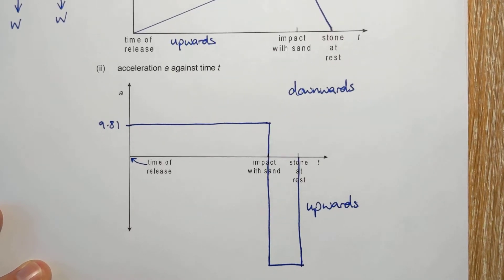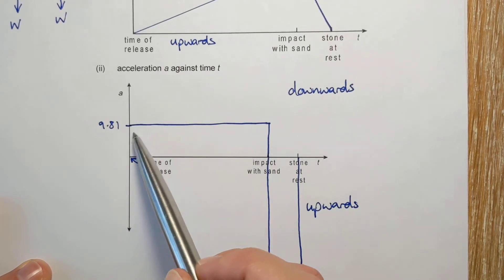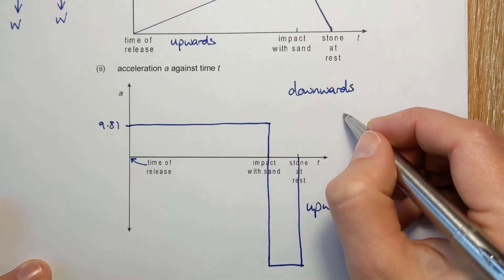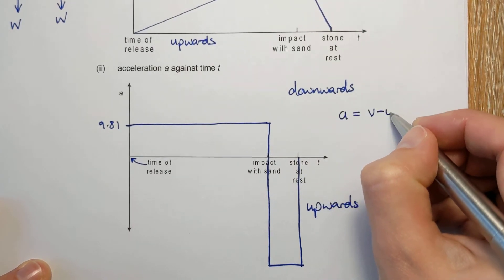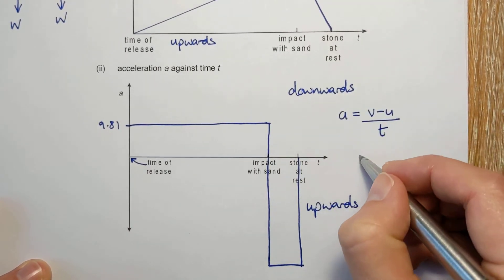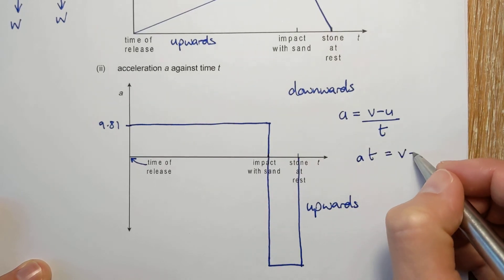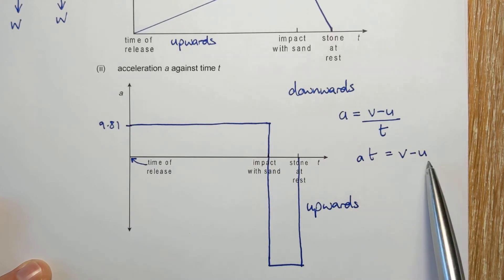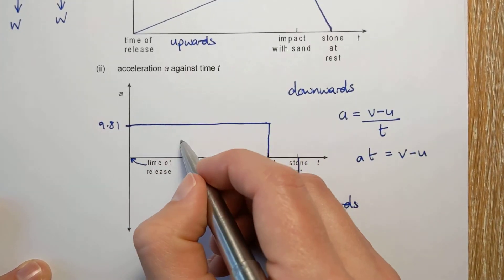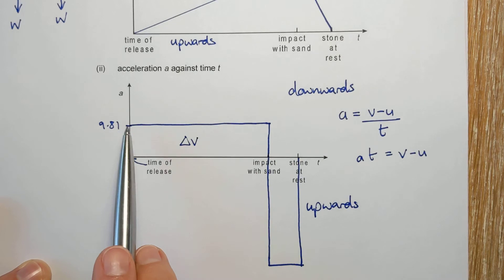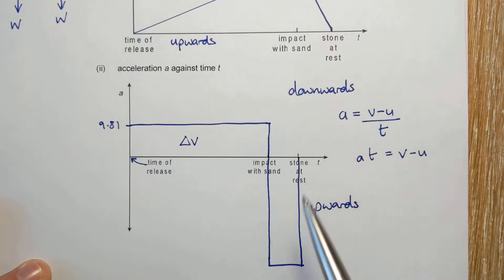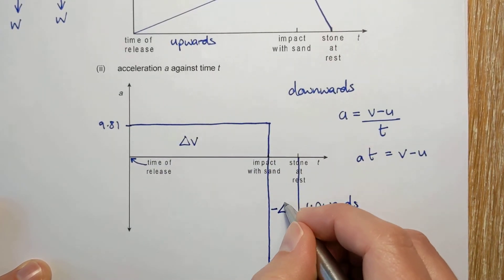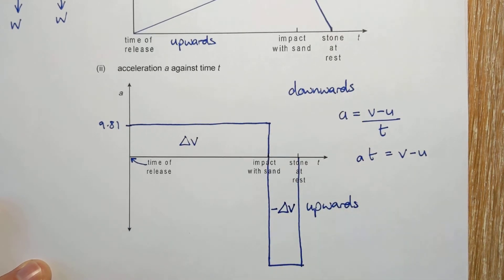This last bit you don't need for the marks, but just to point out that the area under an acceleration time graph is equal to the change in velocity. So here's our SUVAT formula. And if I rearrange, we get that. So the a times t, that's this area here. And that is the change in velocity.